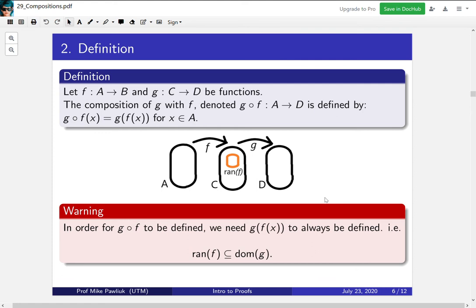In practice though, we're usually going to have a stricter condition. Typically we'll have that the codomain is actually a subset of the domain of g, not just the range.